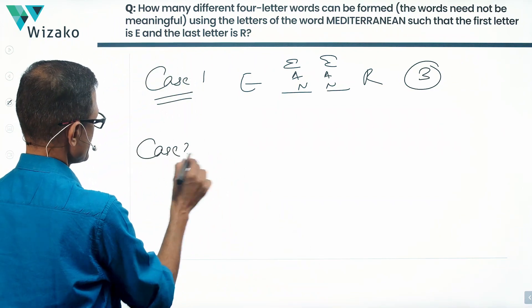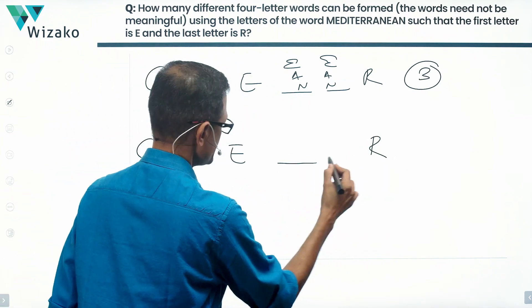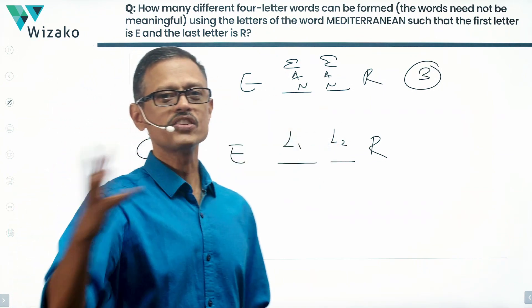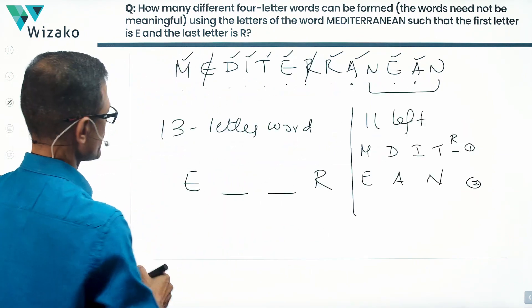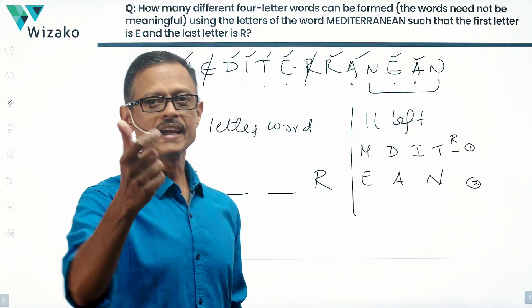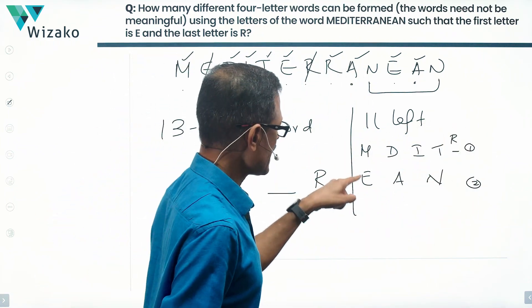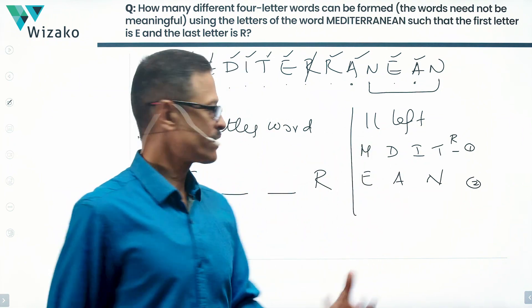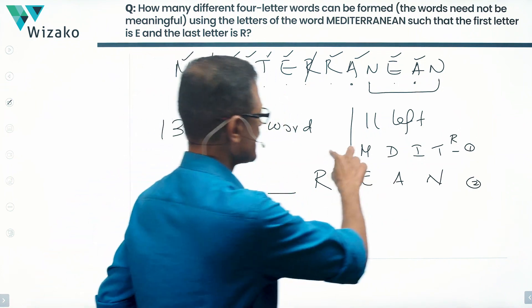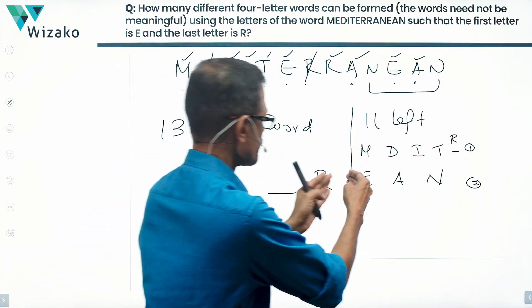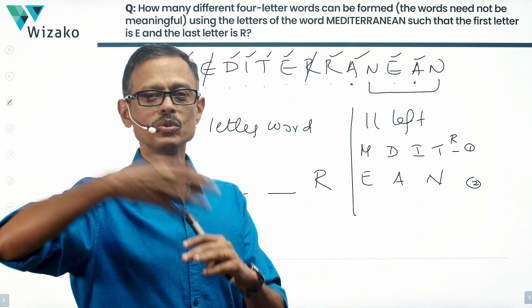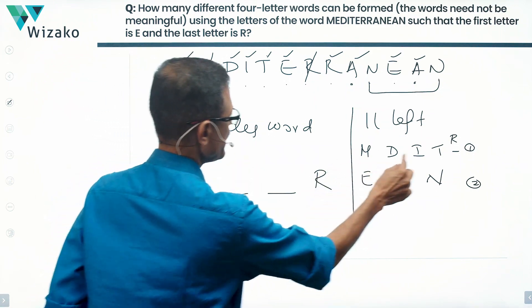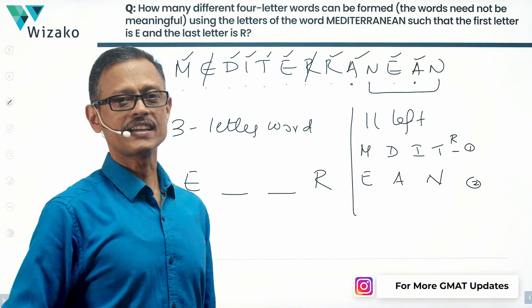Case two: you start with E, you end with R. These two middle positions, I'll call them L1, L2, signify that these two are two distinct letters. Now let's check how many distinct letters we have. On the face of it, it appears we have five: M, D, I, T, R. But hold on. If we get one M and one E, that would still be two distinct letters. One D and one A, distinct letters. One E and one A, distinct letters. So how many distinct letters do we see out of these 11? If we count the repeating letters as appearing once each, M, D, I, T, R, E, A, N are eight distinct letters.